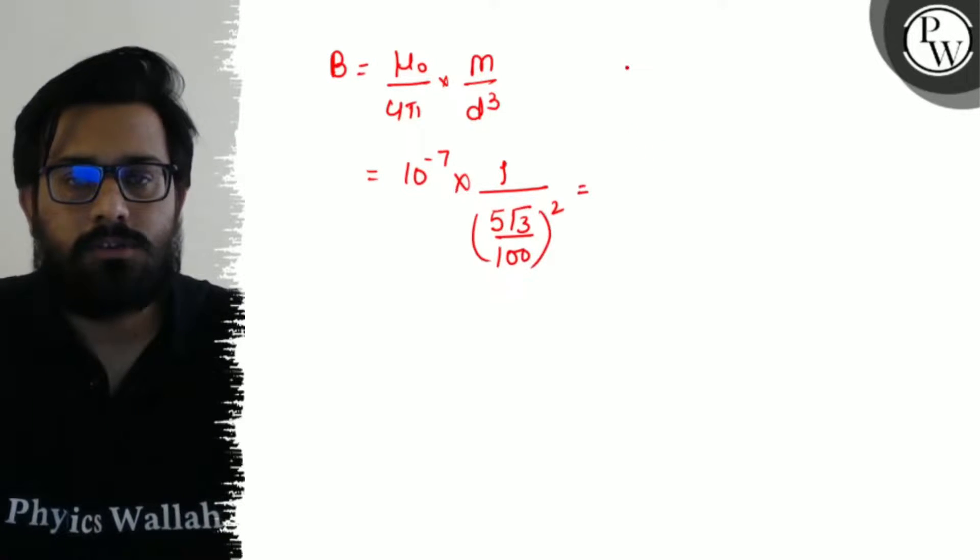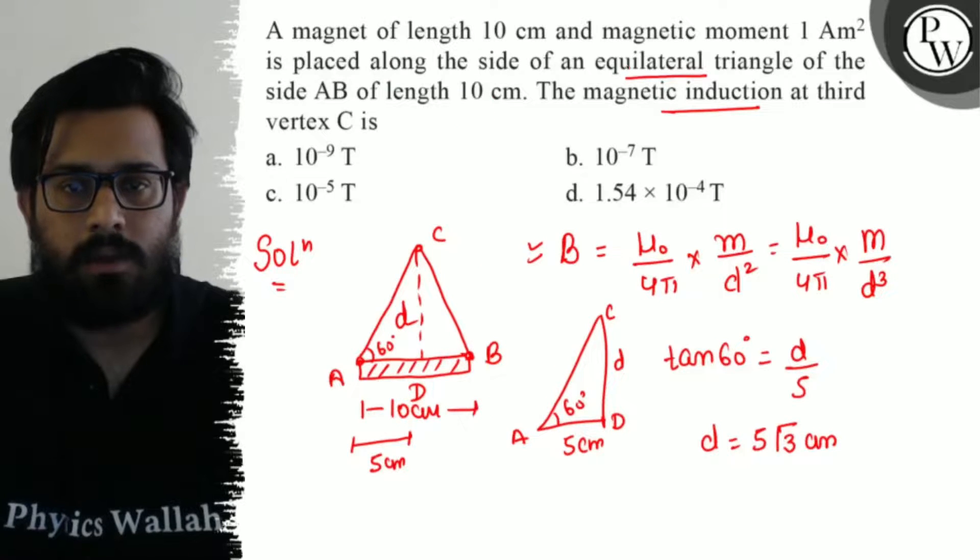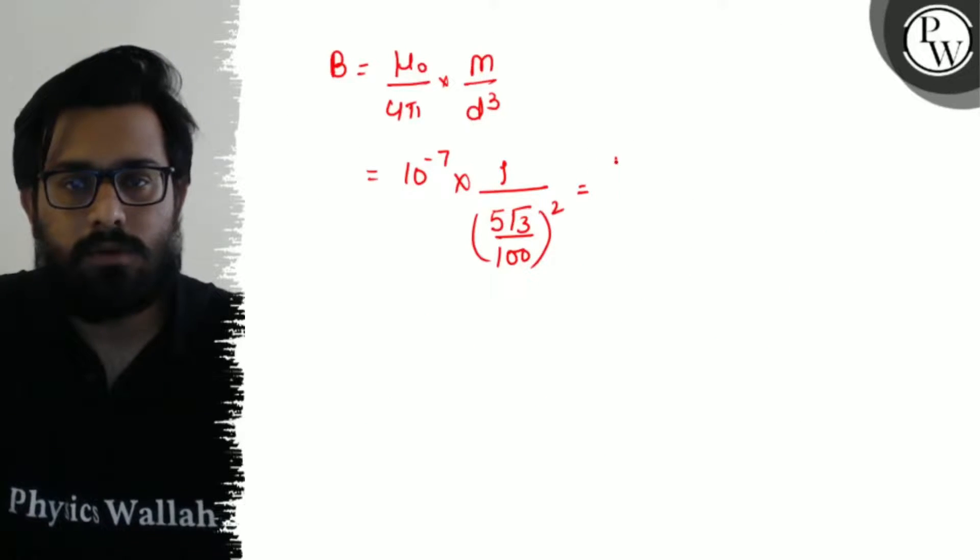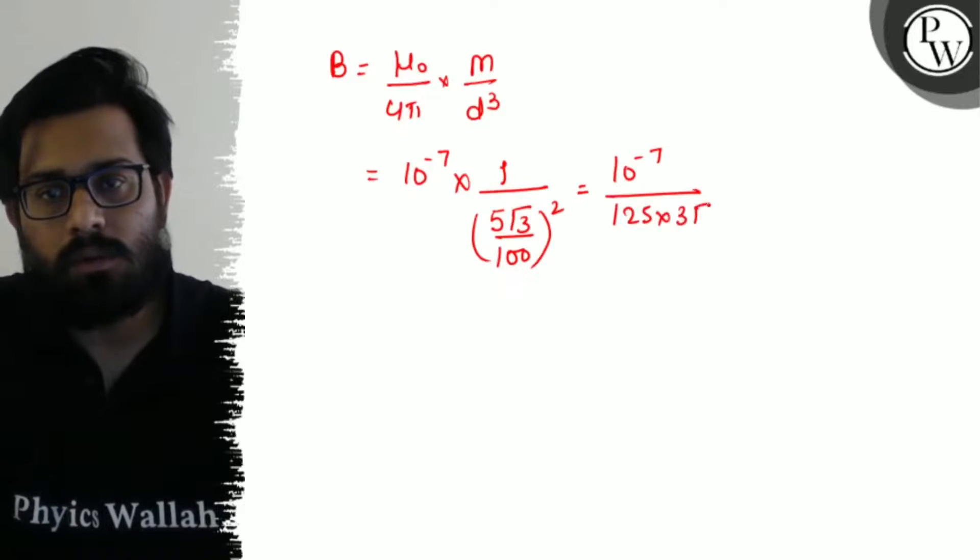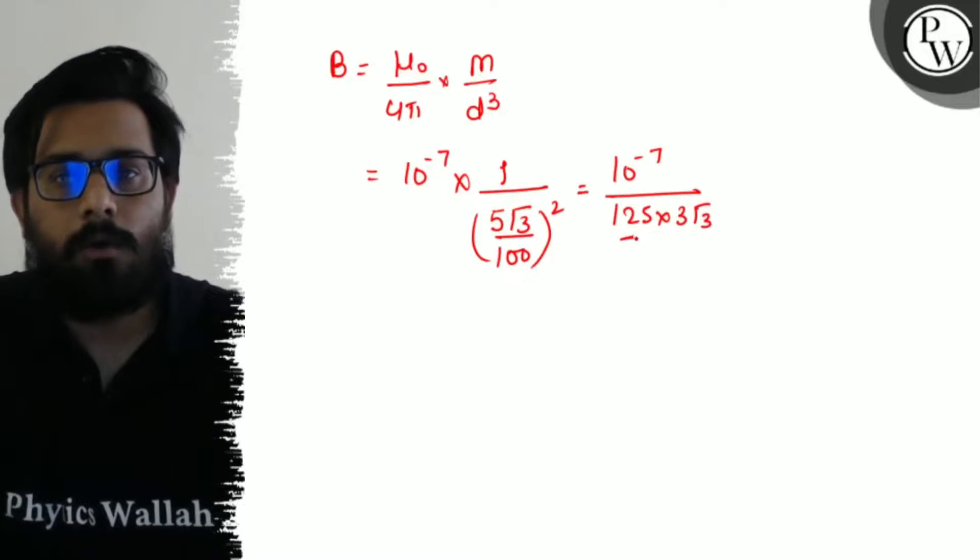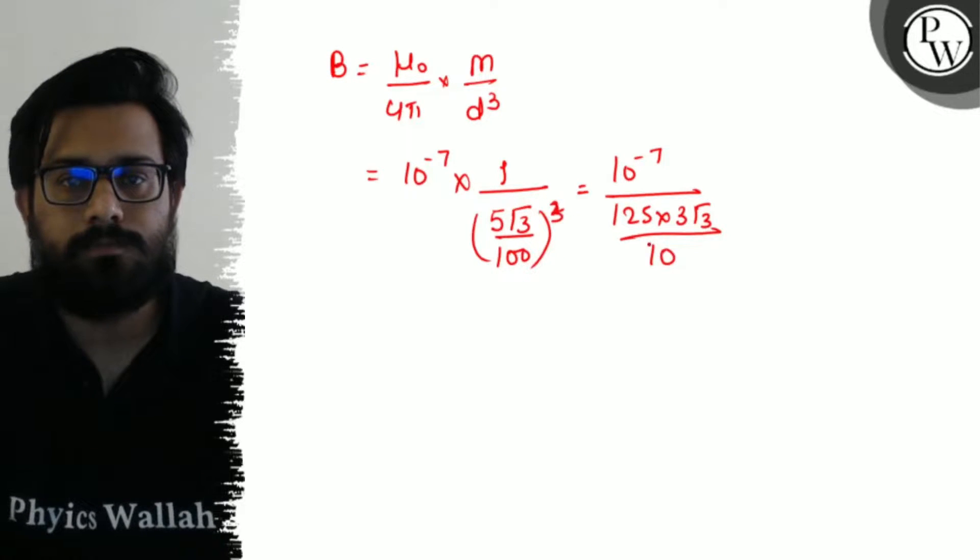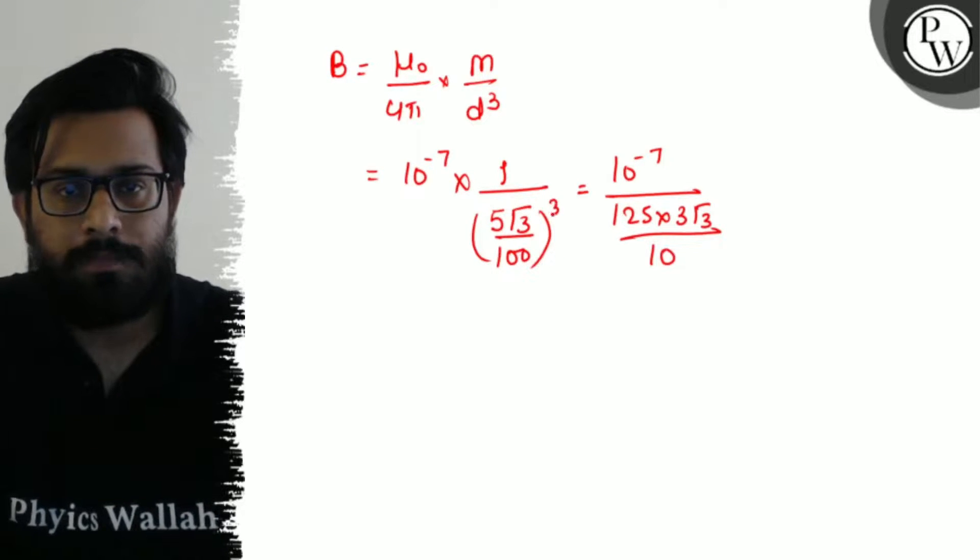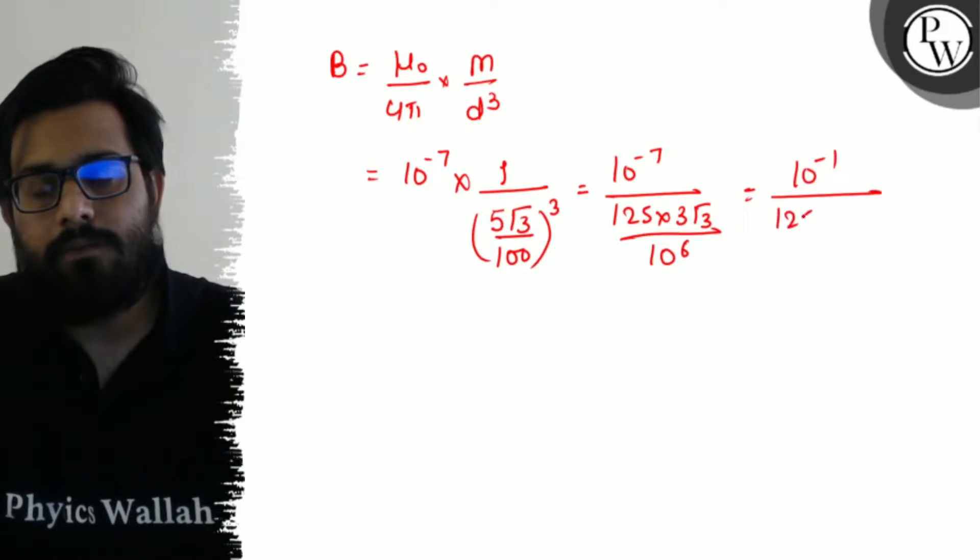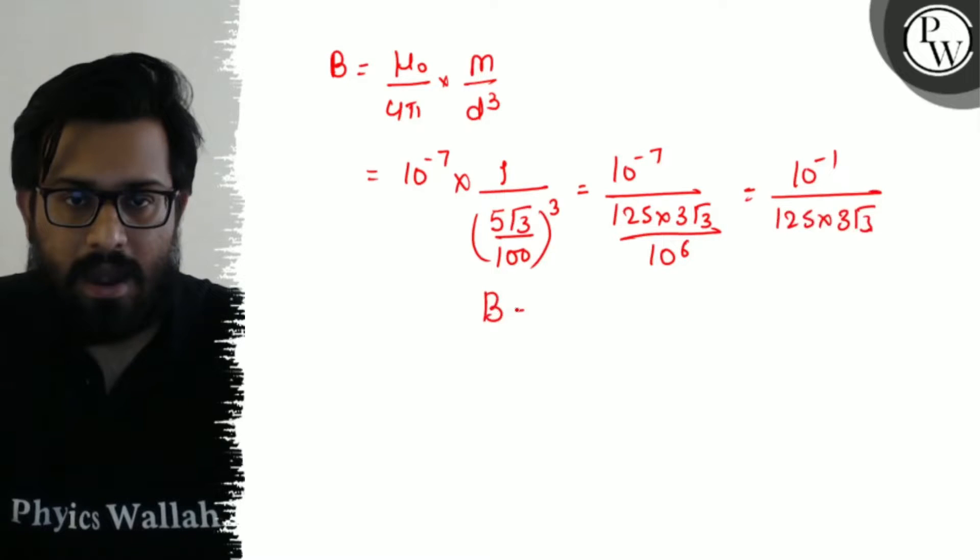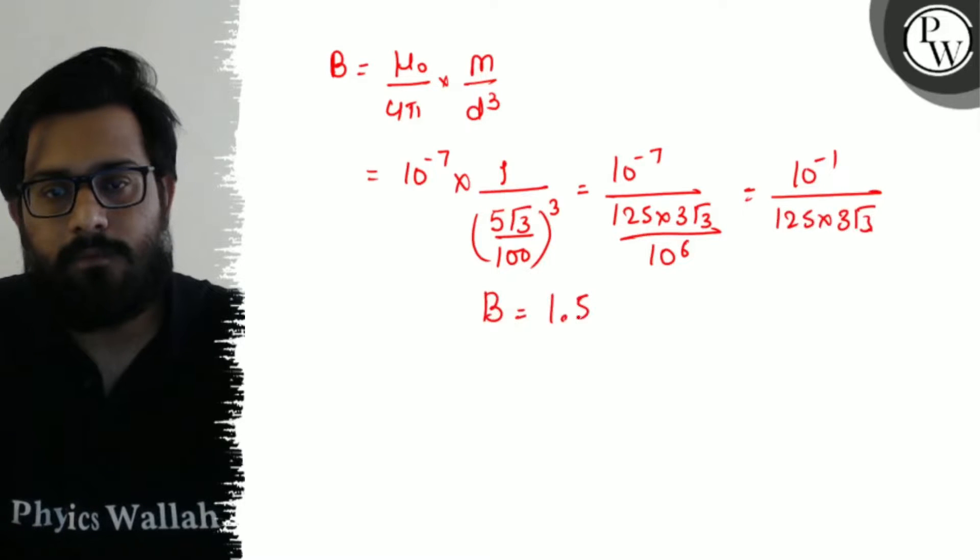And when you simplify this part, and when I simplify this it comes to be 10 to the power minus 7 upon 125 into 3 root 3. And in the denominator, it was cube, so here cube gives 10 to the power 6.